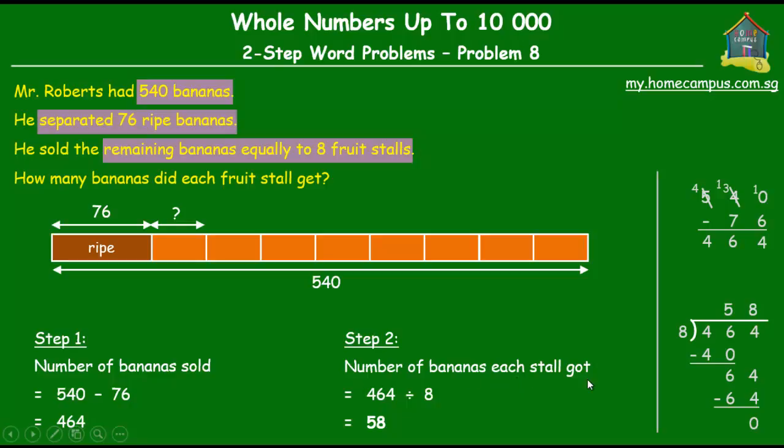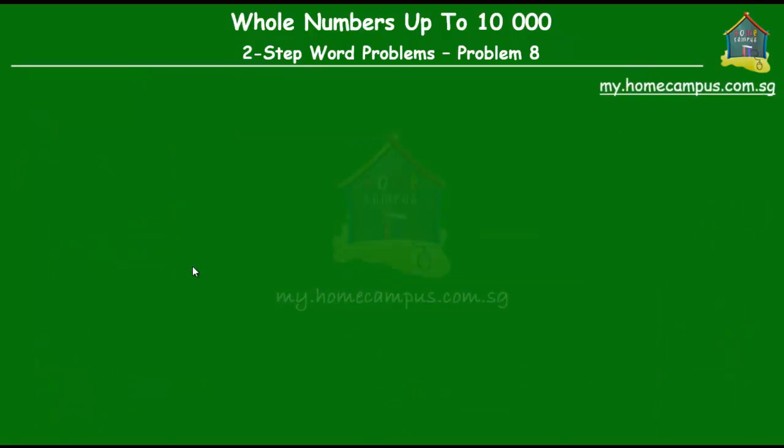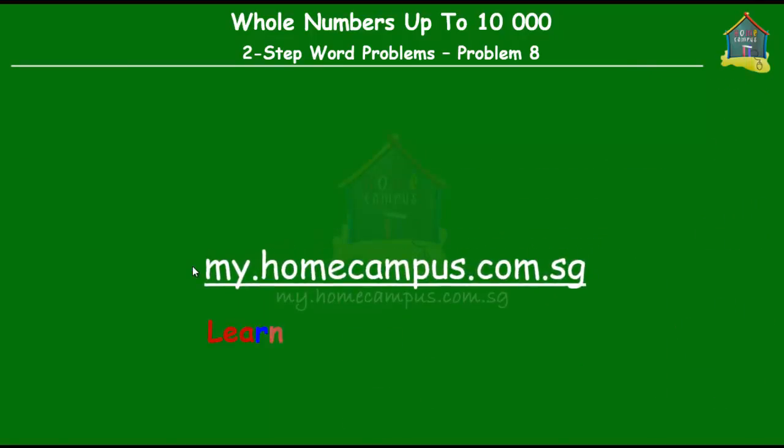All right, so the number of bananas that each stall got is equal to 58. So this little orange unit over here stands for 58 bananas. All right, that brings us to the end of this tutorial. For more such questions, practice exercises and worksheets, please visit this website my.homecampus.com.sg. This is M signing off for now. Bye-bye.